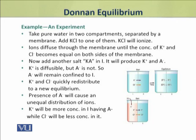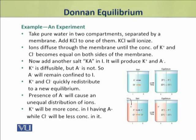Potassium and chloride ions quickly redistribute and establish a new equilibrium. Due to the presence of non-diffusable anion A in compartment 1, the distribution of ions in both compartments becomes unequal. Potassium ions will be more concentrated in compartment 1 which has anion A, while chloride will be less concentrated in this compartment.